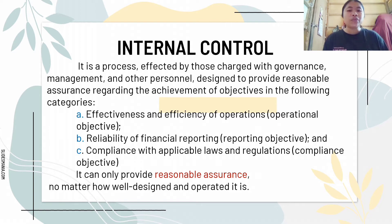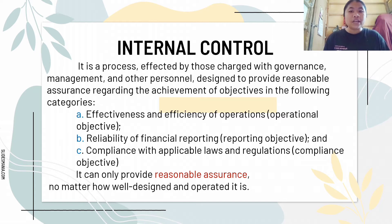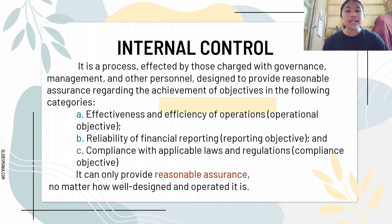Internal control can only provide reasonable assurance no matter how well designed and operated it is, because of the inherent limitations that may affect the effectiveness of internal controls. Among these limitations: first, the cost-benefit consideration, where management's usual requirement is that the control must be cost-effective. Second, management overriding the control, where there is a possibility that a person responsible for exercising control could abuse that responsibility. Third is the circumvention through collusion.